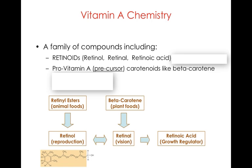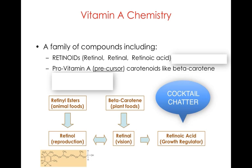The one you may be most familiar with is beta carotene. There's actually a whole family — alpha, beta, gamma, delta carotenes — but the one that we are most familiar with is beta carotene.